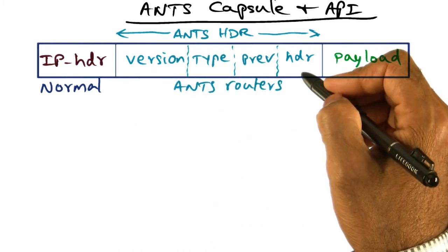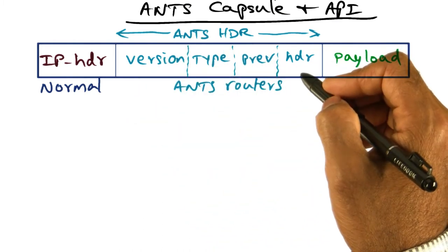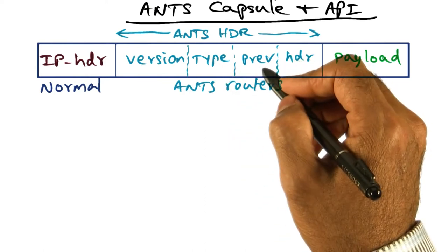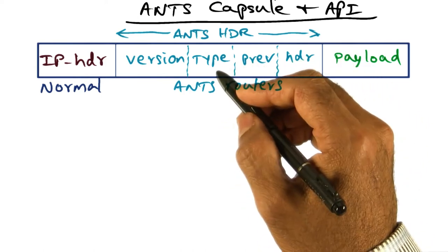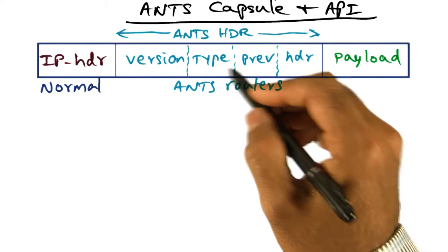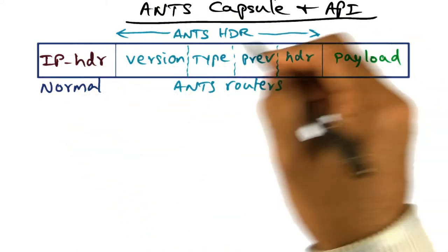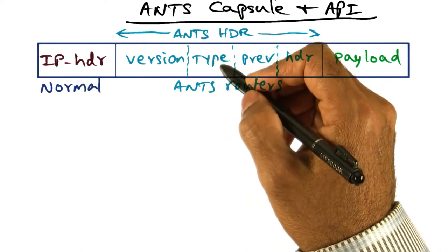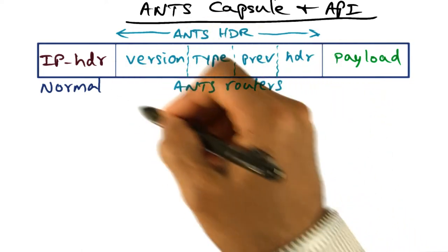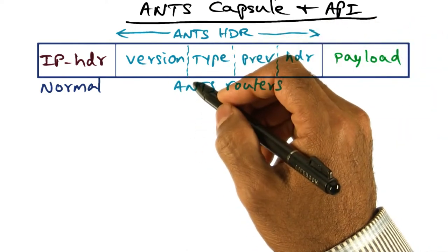And in the middle is this ANTS header, and there are two fields in this ANTS header that are particularly important. One is a type field, the other is a prev field. The type field is a way by which you can identify the code that has to be executed to process this capsule. And this type field is really an MD5 hash of the code that needs to be executed on this capsule, and we'll come back to that in a minute.